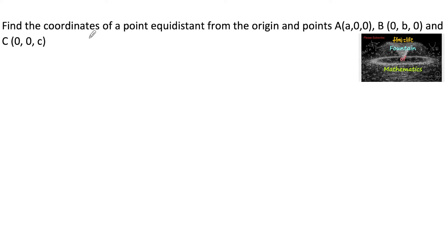Find the coordinates of a point equidistant from the origin and points A(a, 0, 0), B(0, b, 0), and C(0, 0, c).